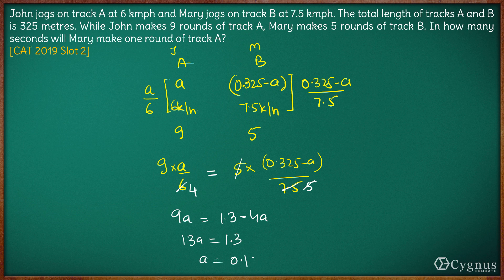A comes out to be 0.1 kilometers, which is basically 100 meters. Now the question is, in how many seconds will Mary make one round of track A?